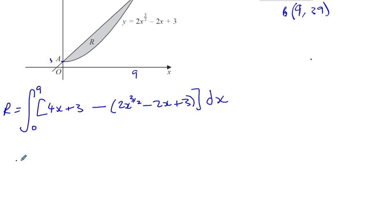Okay, so let's just simplify this before we begin to integrate. So we're going to have 4x plus 3. We're going to have minus 2x to the power of 3 over 2. Let's write that first. Minus 2x to the power of 3 over 2. And you're going to have 4x minus minus 2x which is going to give you plus 6x. And you're going to have 3 minus 3 which is going to give you 0. So you'll end up with this.